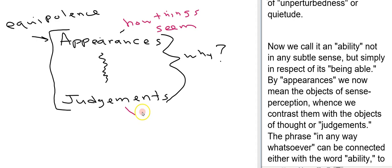So appearances are how things seem, judgments are how we decide the world really is. So things appear some way and then we make judgments about how things actually are.